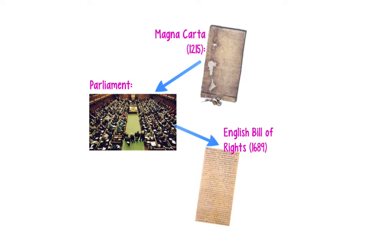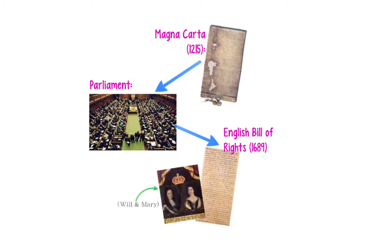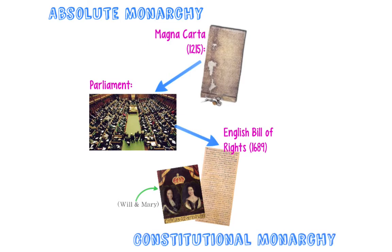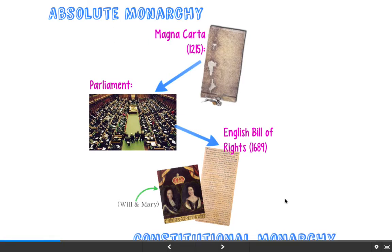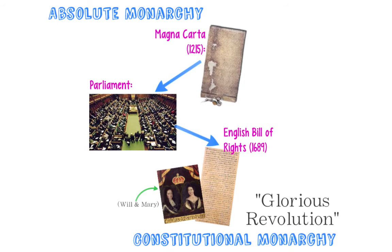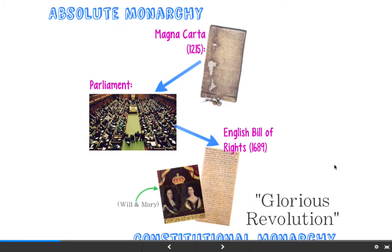This Parliament becomes important because it writes the English Bill of Rights. The British Parliament writes the English Bill of Rights in 1689. The English Bill of Rights is also a document that attempts to limit the king's power, and it is actually very successful because William and Mary signed it, therefore changing the government in England from an absolute monarchy — where the king has all the power — to a constitutional monarchy, where there's still a king but the king is limited by the constitution, aka the Bill of Rights. It's important to note that all three of these things limit the king's power, and this transition from absolute monarchy to constitutional monarchy is called the Glorious Revolution.